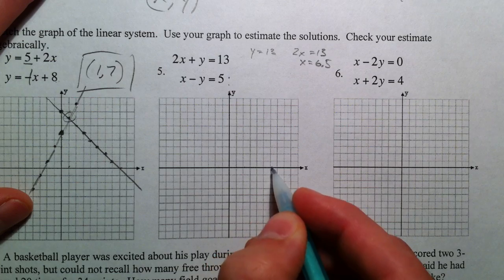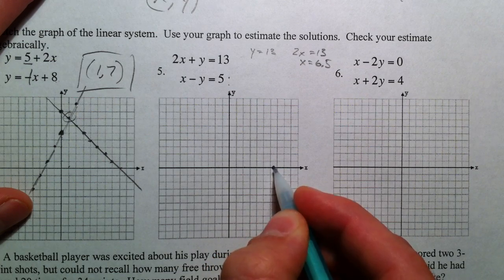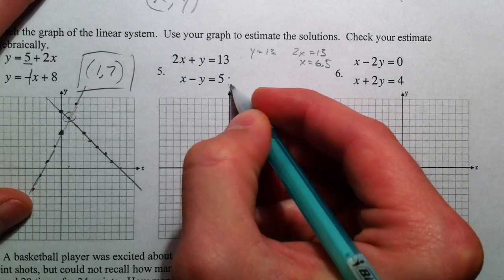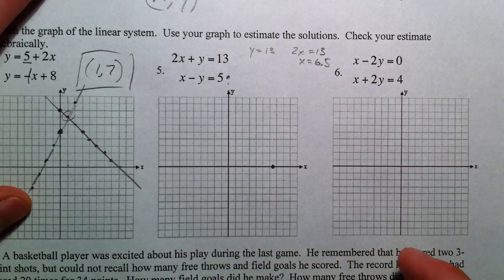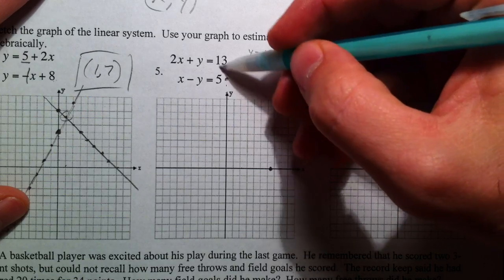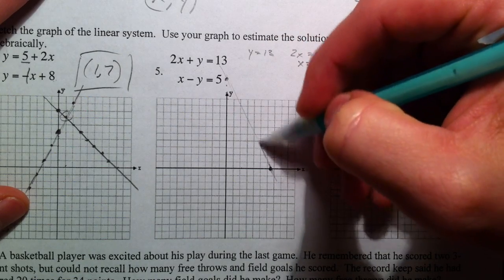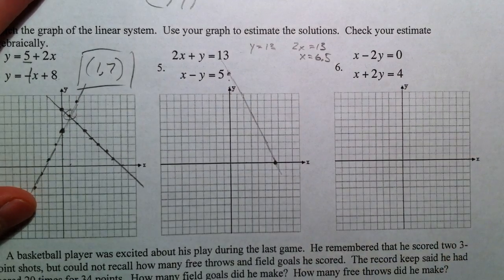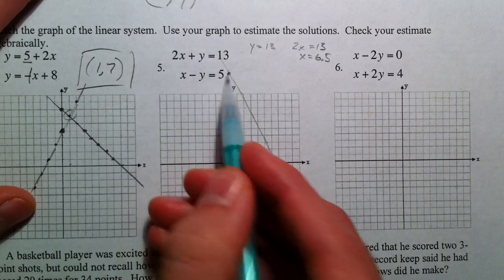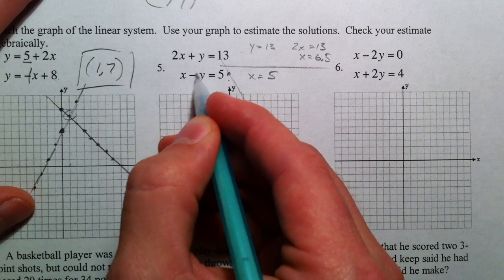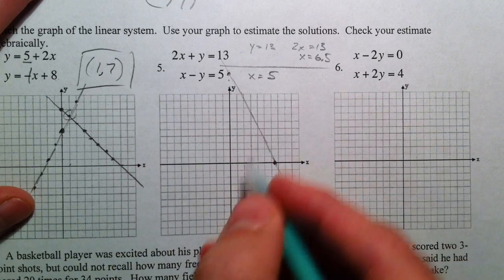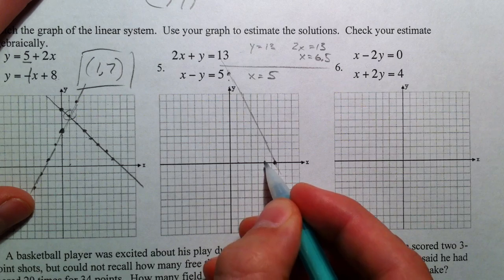So 1, 2, 3, 4, 5, 6, and a half. And so you have those two lines that we're connecting there. And then our other line, x minus y equals 5. If y equals 0, that cancels out and x is 5. So 1, 2, 3, 4, 5.